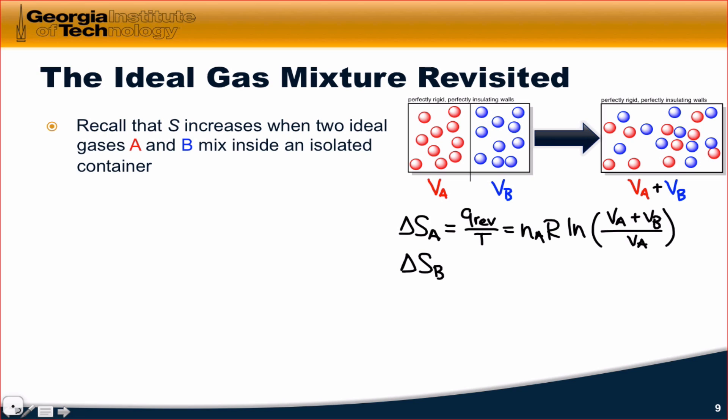We can do the exact same calculation for delta S sub B, Q rev for delta S sub B divided by the temperature. And again, we're looking at an expansion, and so the form of this expression is exactly the same. N sub B times the gas constant times the natural log of the final volume divided by the initial volume, V sub A plus V sub B divided by V sub B.